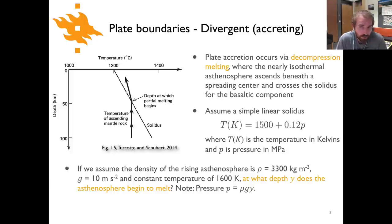In this case, we'll calculate the depth at which we expect partial melting of the asthenosphere to begin. We can do that using this equation here along with a couple additional values. One is the density of the asthenosphere, which is 3300 kilograms per cubic meter. We'll assume the gravitational acceleration is 10 meters per square second and we can assume a constant temperature here of 1600 kelvins. The question for you then is: at what depth does the asthenosphere begin to melt? The key thing here is to note that the pressure is simply density times g times y, and so you can plug that in and you can solve for the depth at which your asthenosphere begins to partially melt. I'll allow you a moment here. You can go ahead and pause the video and take a shot at it and unpause it when you're finished.